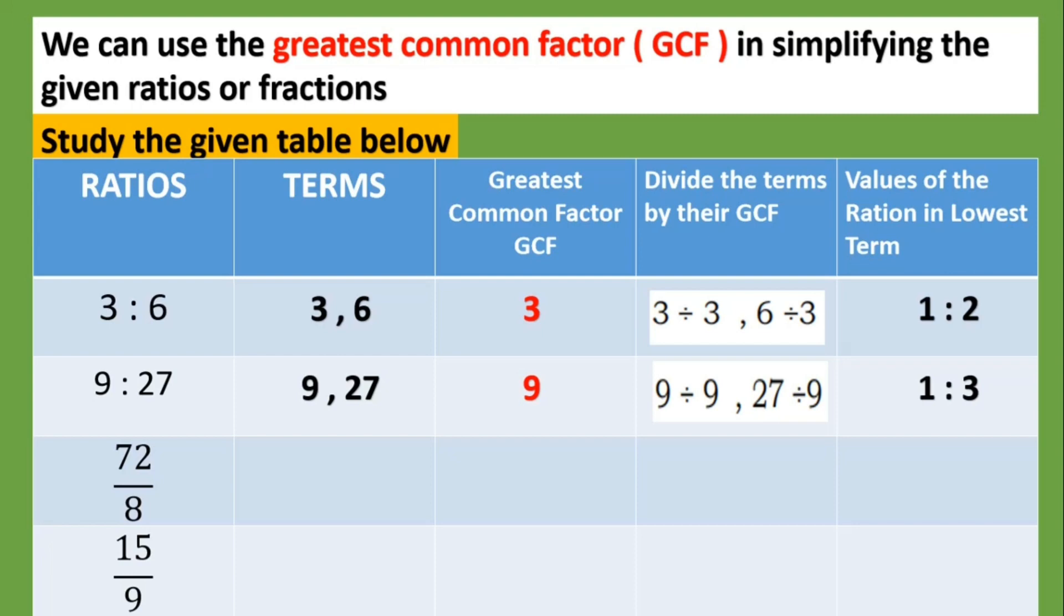Next, 72:8. The terms are seventy-two and eight. Greatest common factor is eight. Divide the terms by their GCF, seventy-two divided by eight, and eight divided by eight. Lowest term would be 9:1.